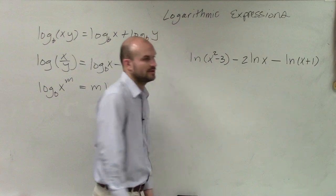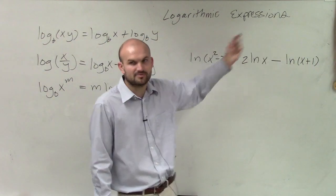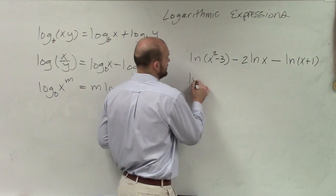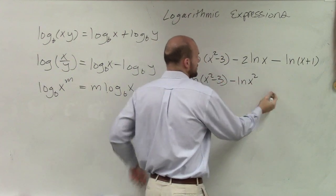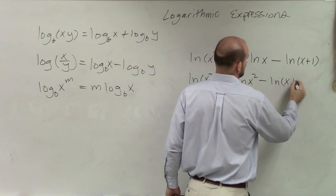So I'm going to take a look at this. The first thing we always want to do is take our exponent and at least bring them up to the top. So we have ln of x squared minus 3 minus ln of x squared minus ln of x plus 1.